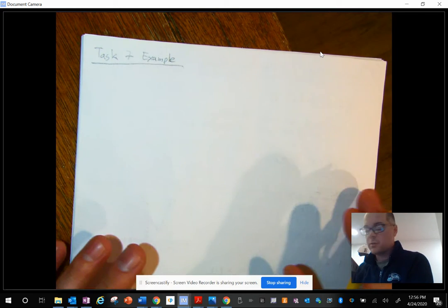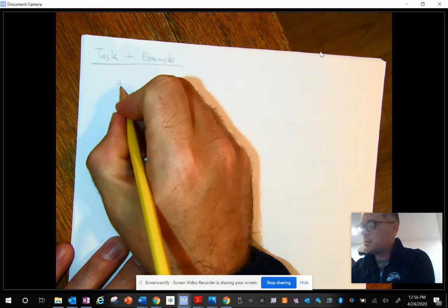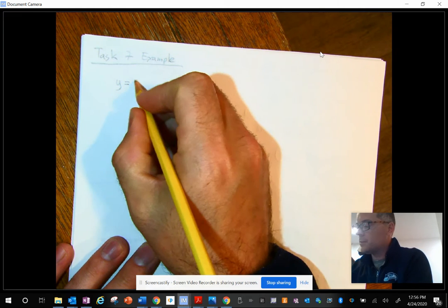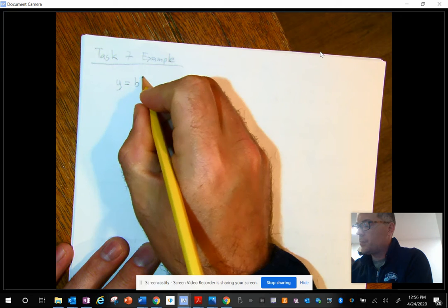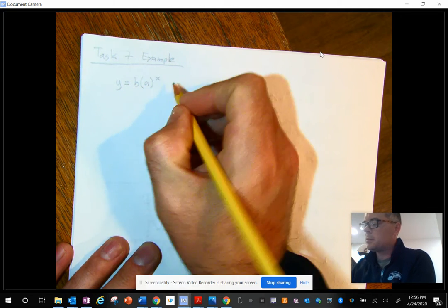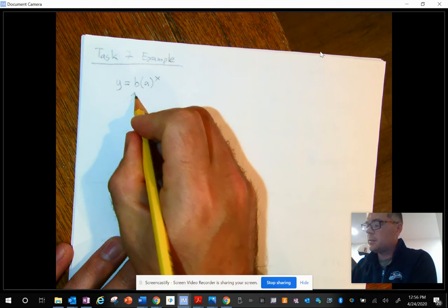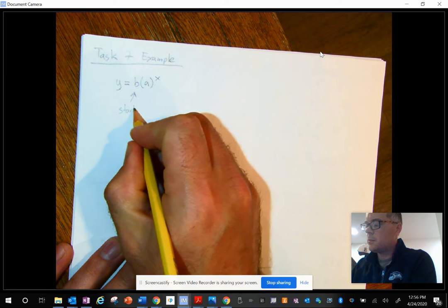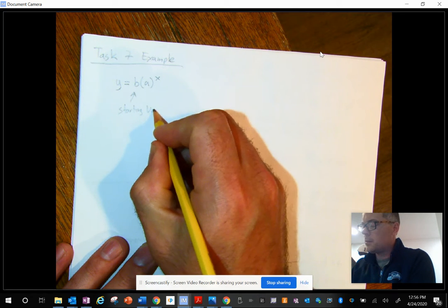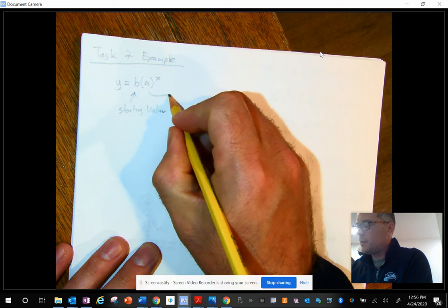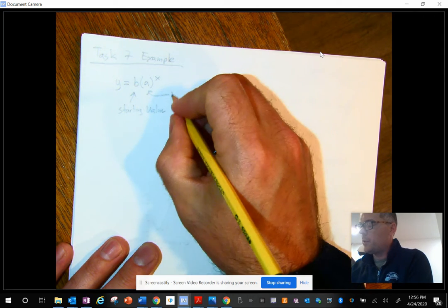Now remember this is our exponents unit, so our basic form of an exponential equation is y equals b times a to the x, where b is my starting value, and a is my rate.